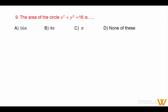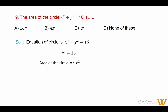Question 9: The area of the circle x² + y² = 16. From the equation, r² = 16. Area = πr² = π × 16 = 16π. Answer is option A: 16π square units.